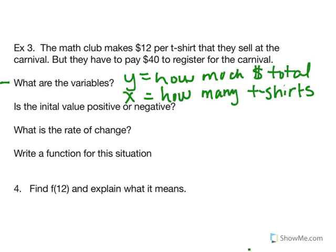So could the math club lose money on this deal? Yep, they definitely could. So when we talk about the initial value here, we're talking about how much total money the math club starts the carnival with before they sold any shirts. And unfortunately, the math club has to pay $40 to even register for the carnival. So the initial value is a negative number here. It's negative 40. Because before they sell any t-shirts, they have to pay the $40. Hopefully that will change for the math club as the day goes on. Their money will increase.